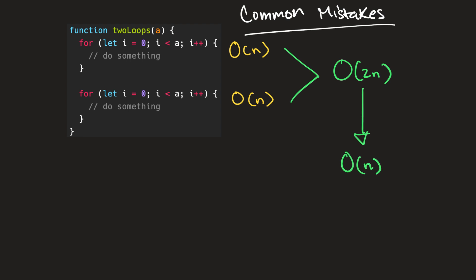But there's one important thing we need to recognize here: this is O(n) because we're iterating through the same input for both of these for loops. So as long as our loops are acting on the same input, then this would be the resulting complexity. But there's actually another common mistake people make with time complexity, which is somewhat related to this one.